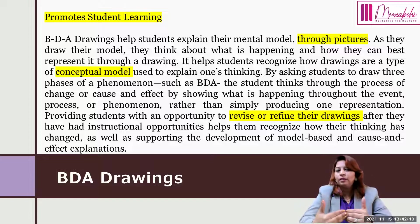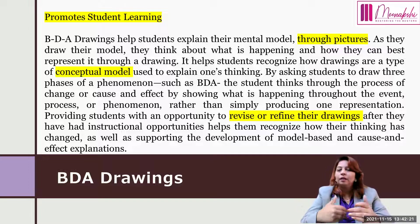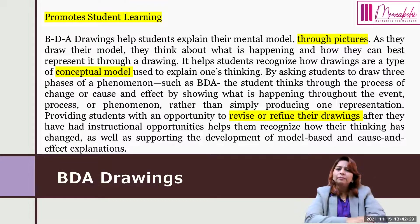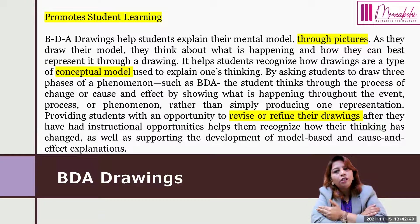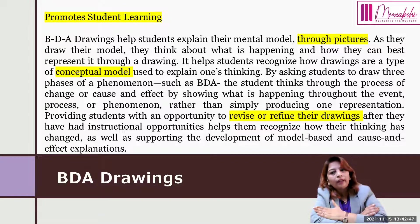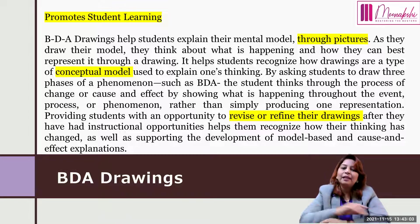Students think through the process, the change, or the cause and effect by showing what is happening during the event or phenomenon. Once they represent their thinking through visuals, through art, through drawings, the feedback process happens in the class. The teacher discusses the drawings, peer feedback occurs, students work in groups and revise their drawings, and later refine them — presenting updated knowledge through their refined drawings.